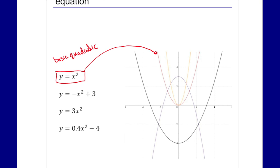For y equals negative x squared plus three, we have a couple of variables: a negative out front and a plus three at the end. Going back to our a, h, and k — the negative in front means it opens down. Looking at the graph, only one graph opens down, and that is the purple one. The plus three means the parabola has moved up three, which we can see because the vertex is now three units higher.